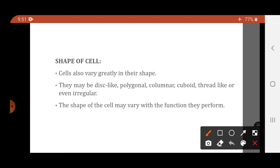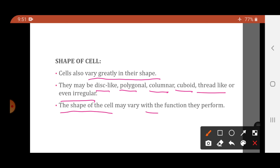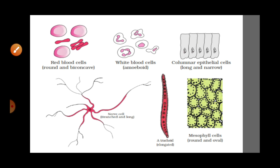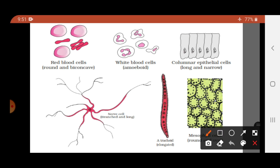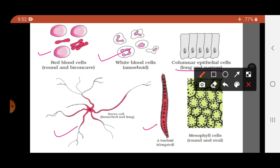The shape of cells also varies greatly. They may be disc-like, polygonal, columnar, cuboidal, thread-like, or even irregular. The shape of a cell may vary with the function it performs. Examples include RBCs, white blood cells, columnar epithelial cells, nerve cells, tracheids, and mesophyll cells.